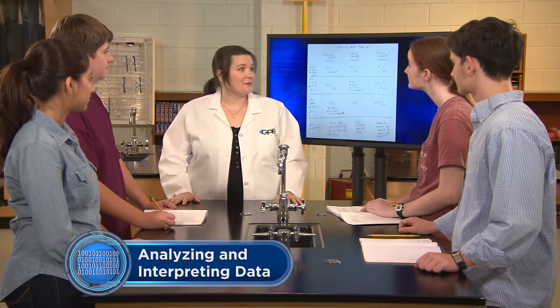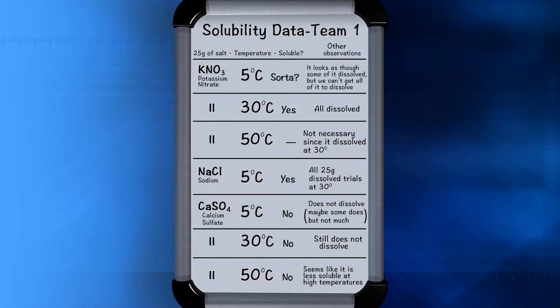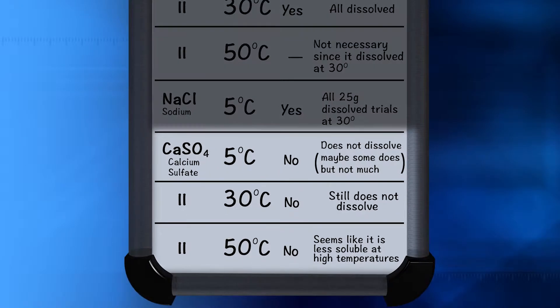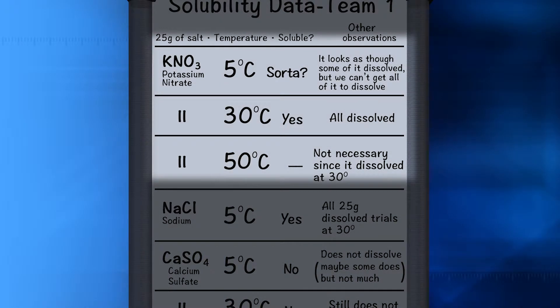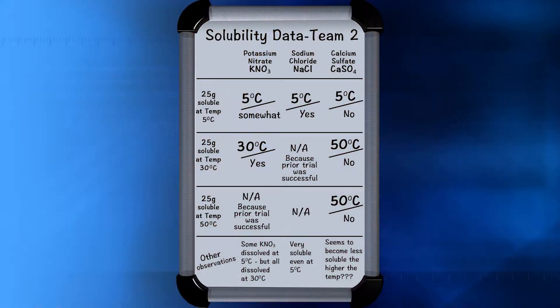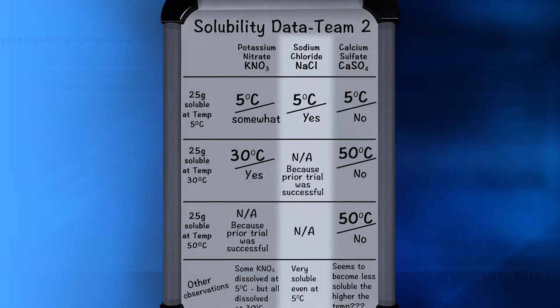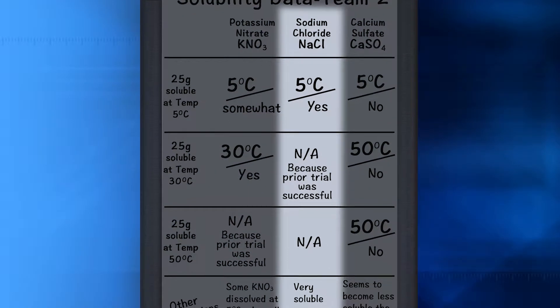Let's head back to our classroom where our students are in the process of investigating how temperature can affect the solubility of three different salts. Looking at the data, students found different results for each of the salts. The calcium sulfate didn't dissolve at any temperature. The potassium nitrate dissolved completely at 30 degrees Celsius, but only some of it dissolved at 5 degrees. The sodium chloride completely dissolved even at the lowest temperature.